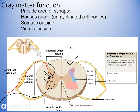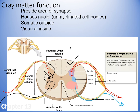Sensory neurons bringing somatic information in synapse in the dark purple area. Sensory neurons bringing visceral information in synapse in the light purple area. Motor neurons taking visceral information out to organs like the gallbladder or pancreas synapse in the blue area. Motor neurons taking somatic information out synapse in the apricot area. So it is very specific where neurons are meeting up with other neurons.